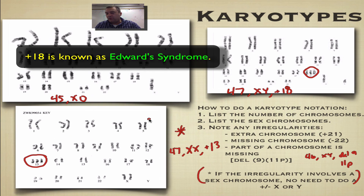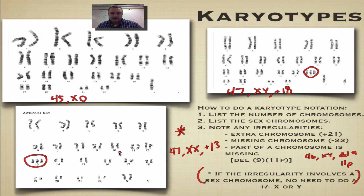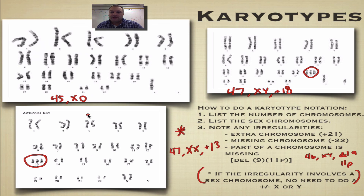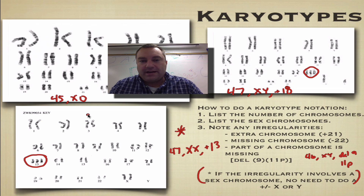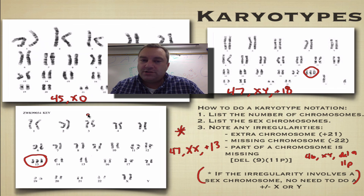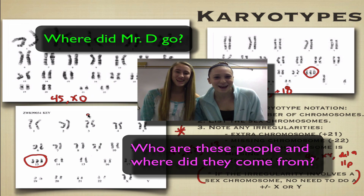Extra or missing chromosomes typically cause some serious problems, especially as seen in those examples. The 45XO case will be covered in the last screencast in this series. We'll end this screencast here, but don't hesitate to watch it more than once — this is an important concept in this chapter. We'll catch you on the flip side.